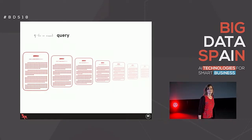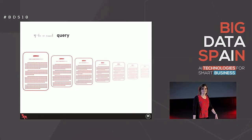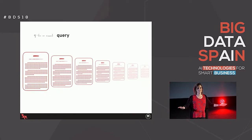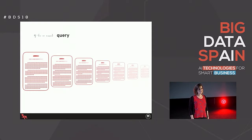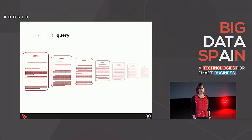The goal of learning to rank is, unsurprisingly, to rank documents. We want to take the query that the user has given and return to them a list of documents in order of relevance.